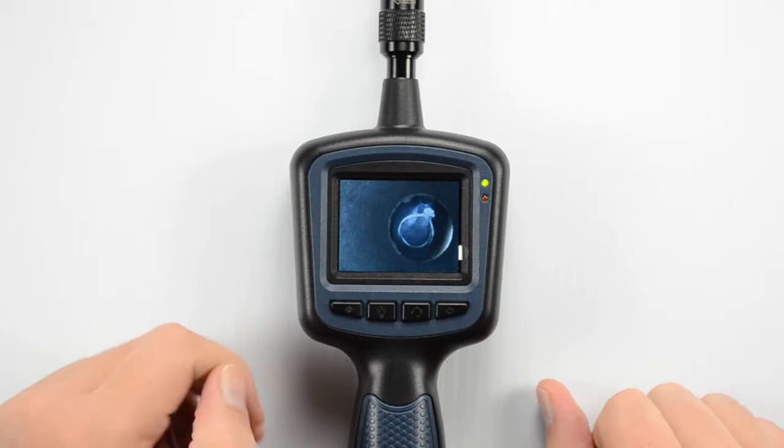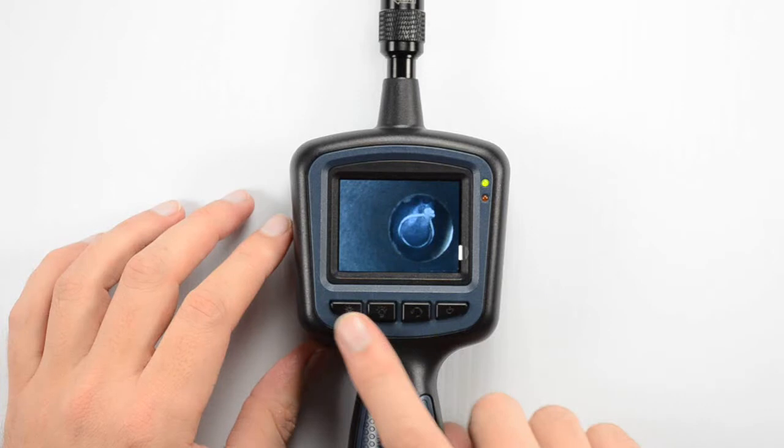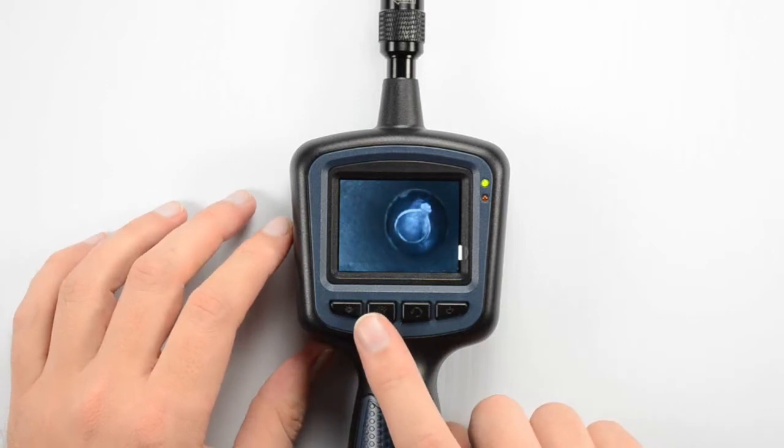As you can see we've got our camera down a drain. There's a ring down at the bottom of that. So let's take a look at some of the adjustments that we have here on the camera itself.